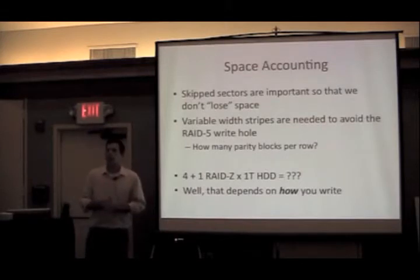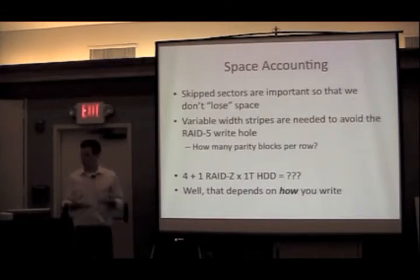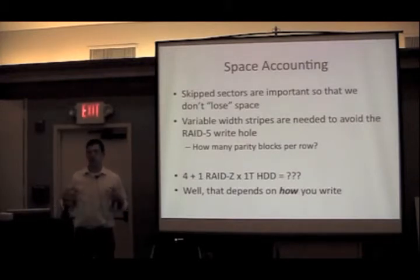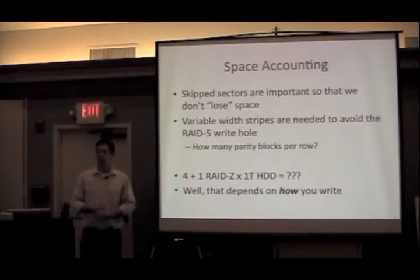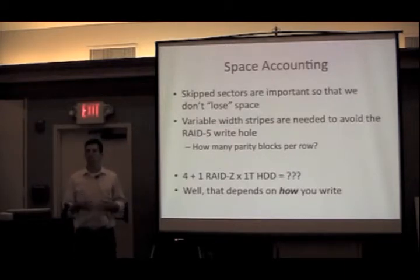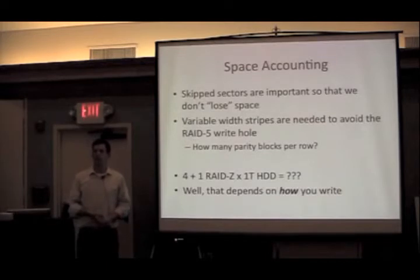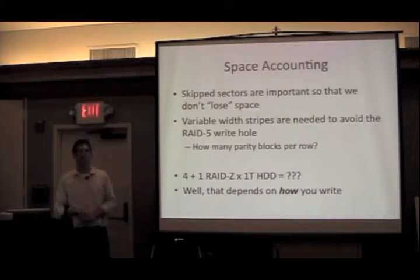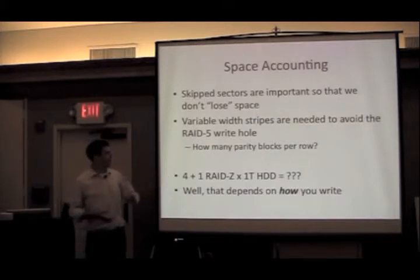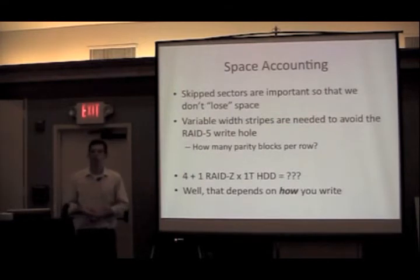The skip sectors are important so we don't lose those stray sectors. But the variable-width stripes we need to avoid the RAID-5 write hole also create a complication: we don't know in a given stripe how many parity sectors there are going to be — it's unknowable a priori. If we write a bunch of small chunks we'll have a lot of parity; if we write large chunks we have less. So a simple question: if I have a 4+1 RAID-Z configuration made of one-terabyte drives, how much can I store?